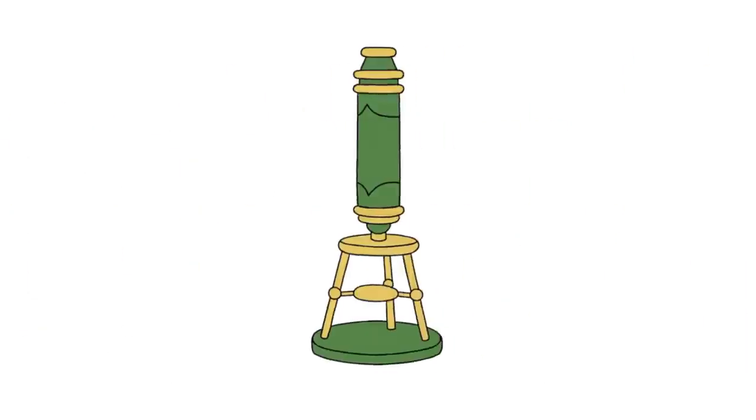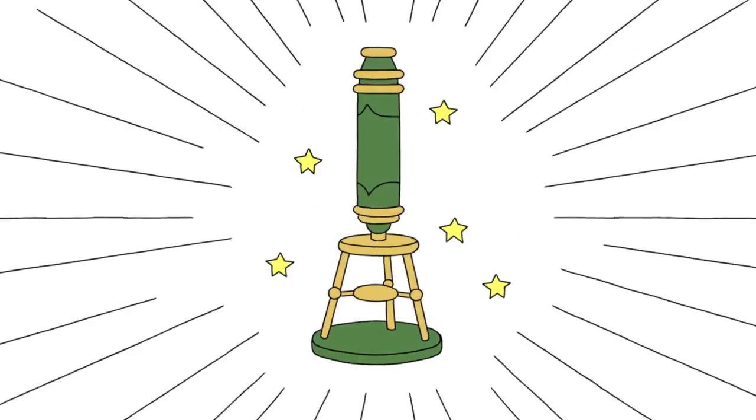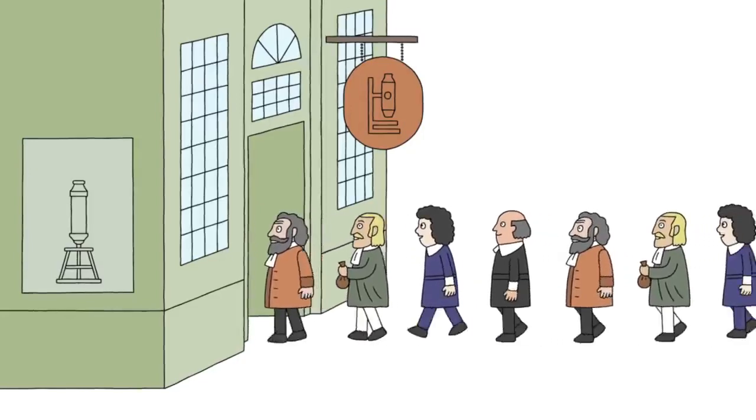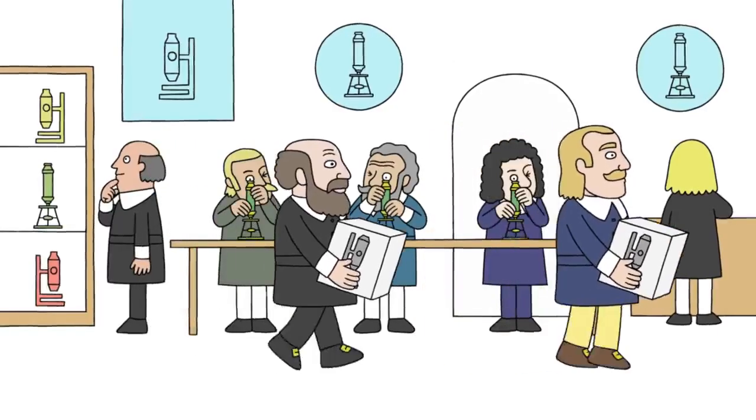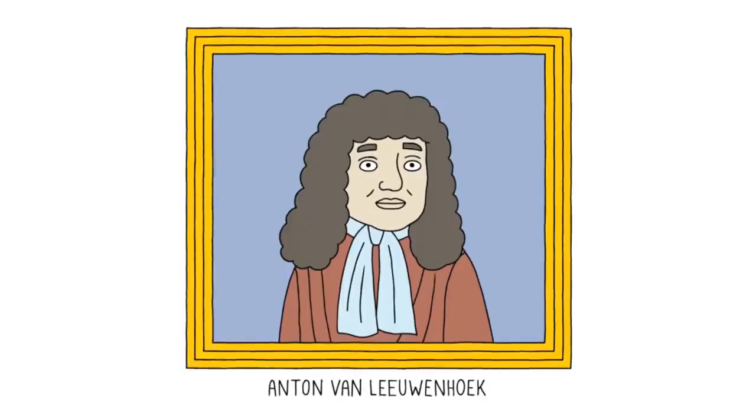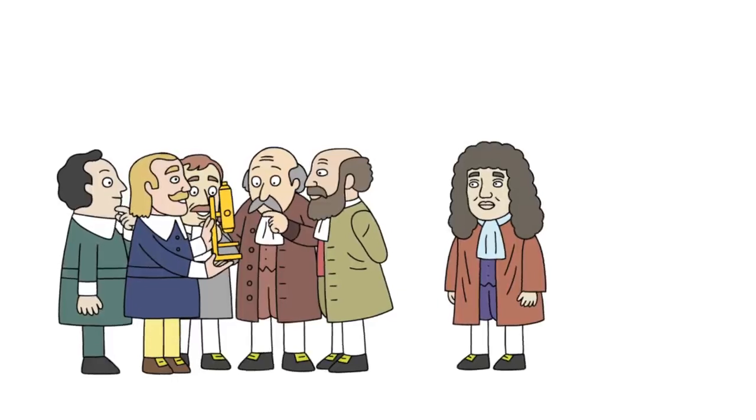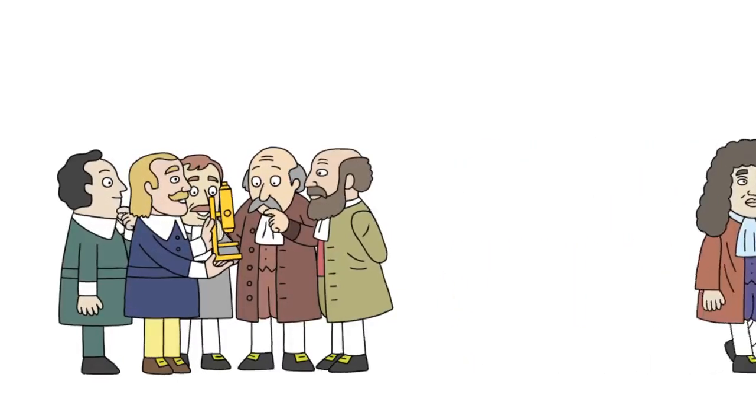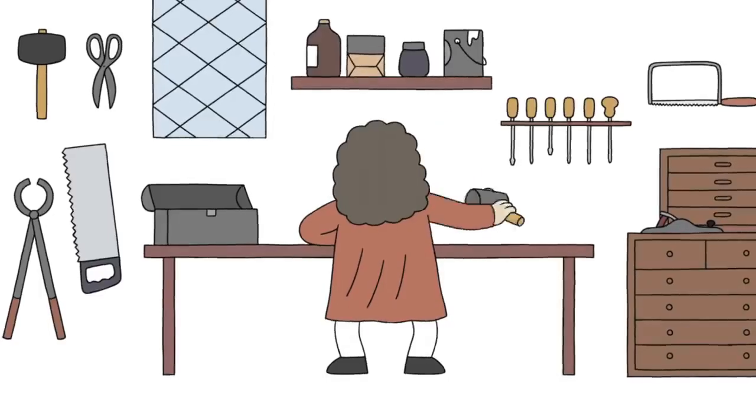Despite this, the microscope soon became a hot item that every naturalist or scientist at the time wanted to play with, making it much like the iPad of its day. One such person was a fellow Dutchman by the name of Anton von Leeuwenhoek, who heard about these microscope doohickeys, and instead of going out and buying one, he decided to make his own.